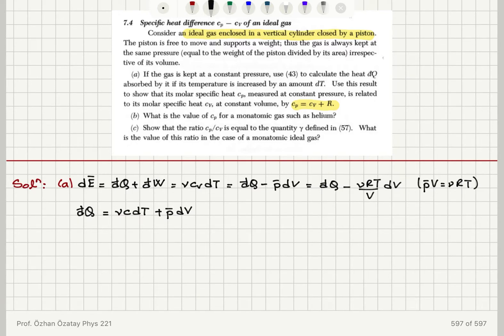Now, if I consider the ideal gas law p bar v is equal to nu rt and take its differential form, I find that v times d p bar plus p bar times dv is equal to nu r dt for a constant number of gas molecules. If this is done at constant pressure, then I have no dp contribution and therefore I will find that p bar dv is equal to nu r dt.